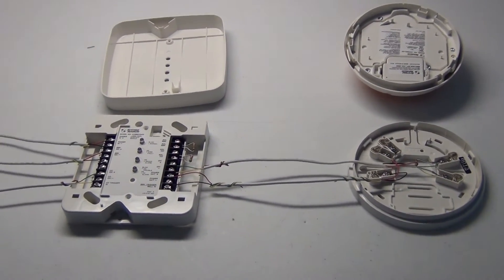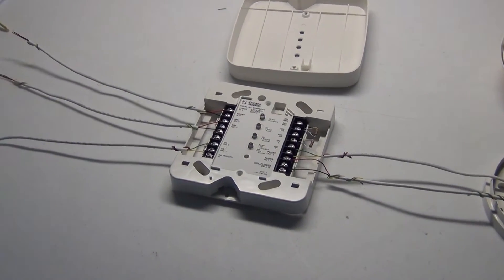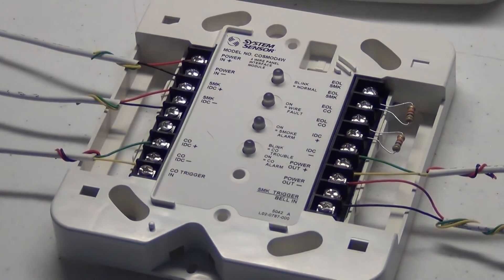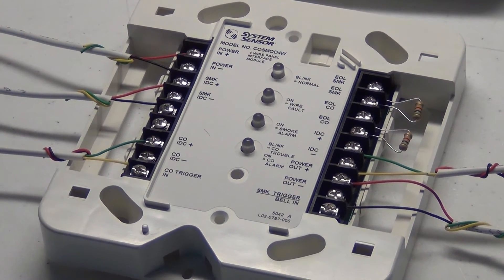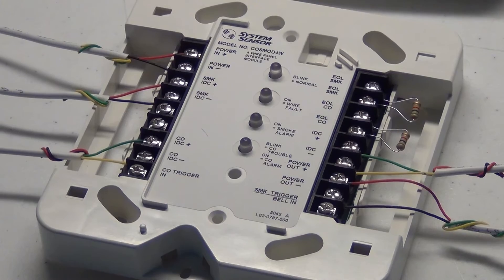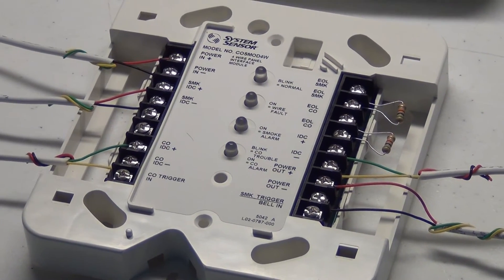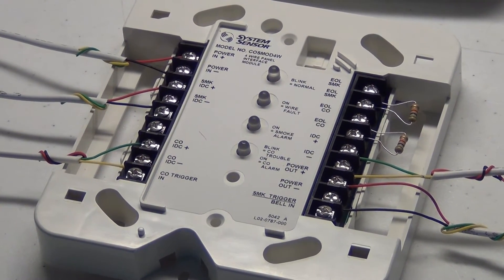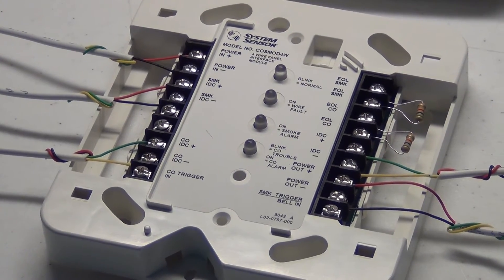We're going to start over here at the module so I'm going to do a little zoom in here and what you see on the module are two sets of terminals one on the right one on the left. The one on the right connects to your smoke CO combo units and the terminal strip on the left will connect to your alarm panel.